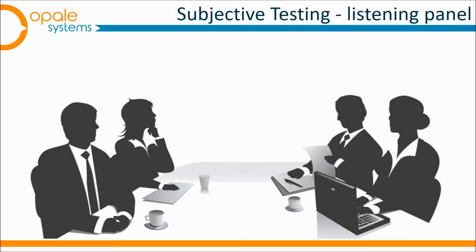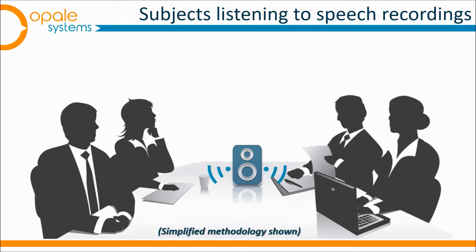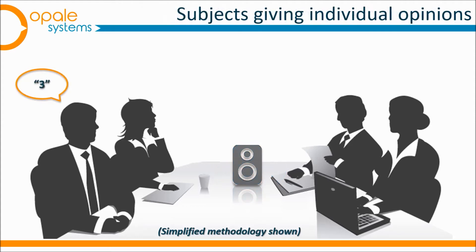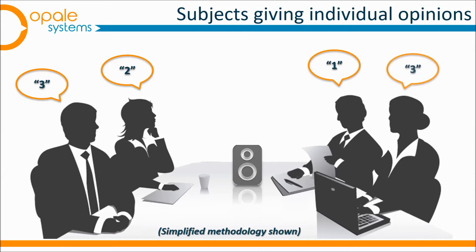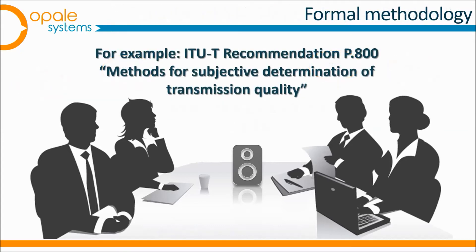In a subjective listening test, a gender and age balanced group of subjects is given simple instructions about the MOS one to five scale before hearing short recordings of speech from the network being tested. As they listen to each sample, they each write down the integer from the one to five scale which they think is appropriate. Each set of scores is averaged across the subjects — hence the term 'mean opinion' in MOS.